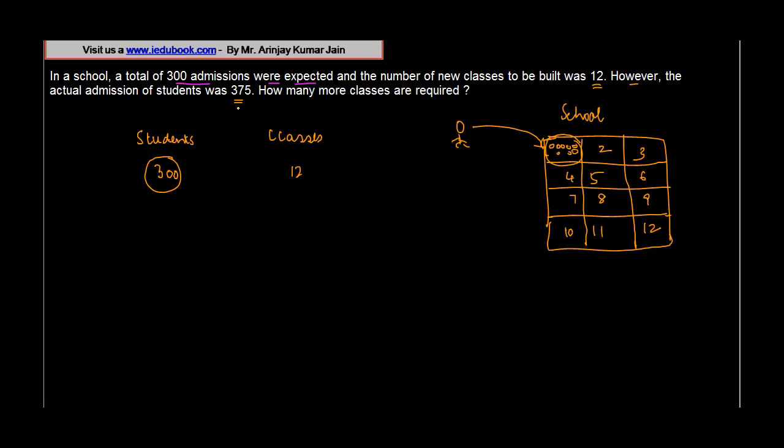However, the actual admission of students was 375. So the number of students which actually came in were 375. Basically, there were 375 students who came in, so the number of students actually increased. From here to here, it's showing a reverse trend, but there's an increase in the number of students.